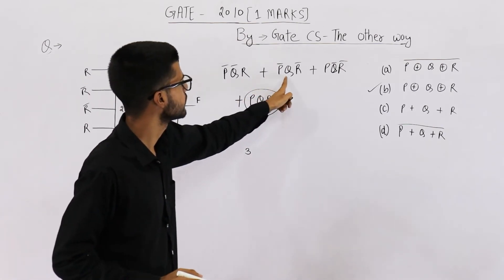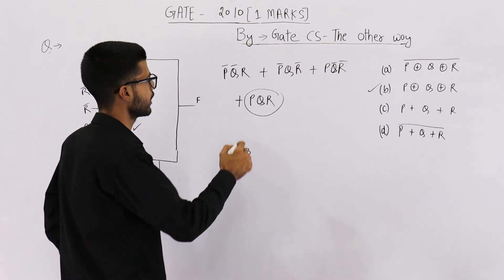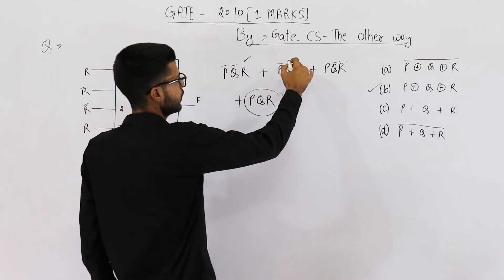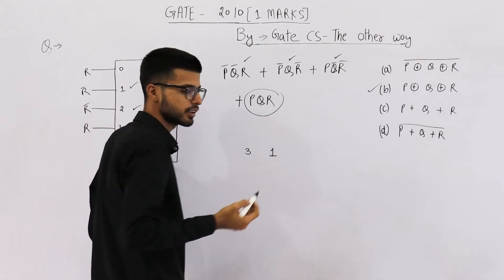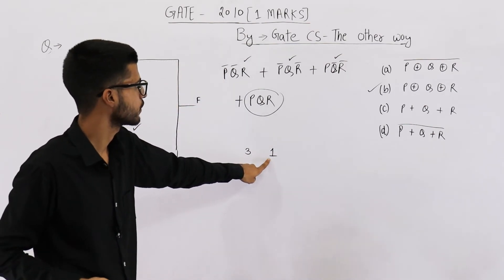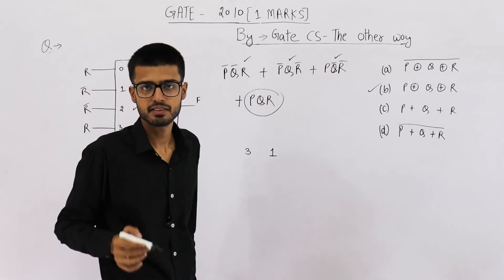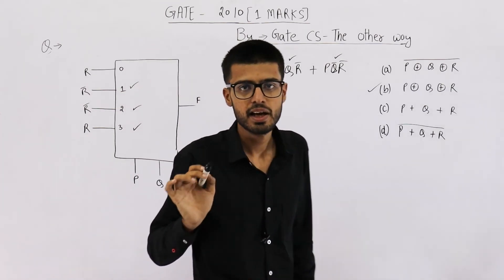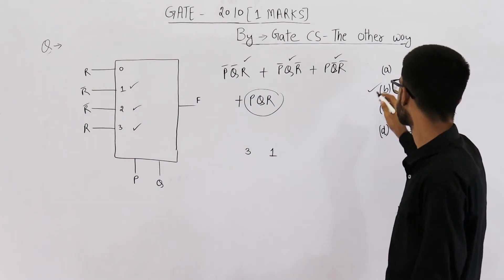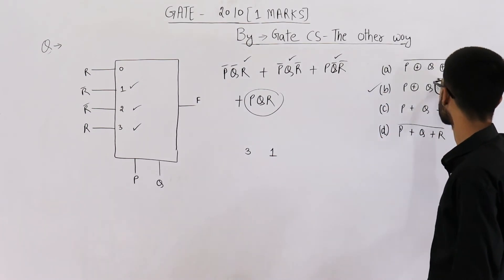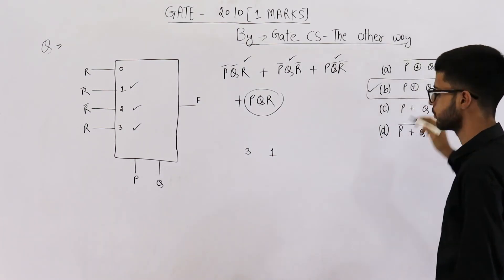And these three terms say any one of them is one. See, r is one or q is one or p is one. That means any one is one. Three is also odd number, one is also odd number. Each and every case is covered when any odd number of inputs are one. So this is the equation for XOR. Your answer is option b.